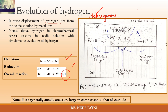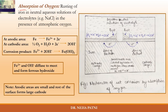In hydrogen evolution, corrosion causes displacement of hydrogen ions from the acidic solution. Metals above hydrogen in the electrochemical series will evolve hydrogen. Importantly, the anodic area is large in comparison to the cathodic area.